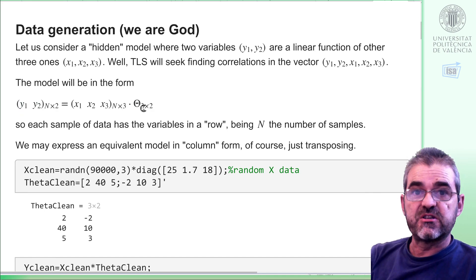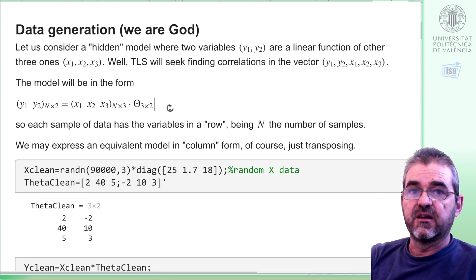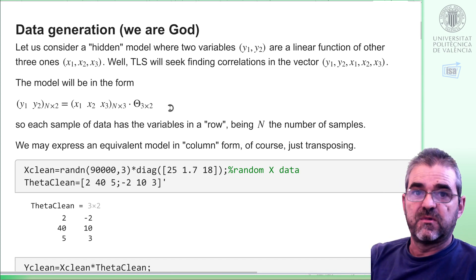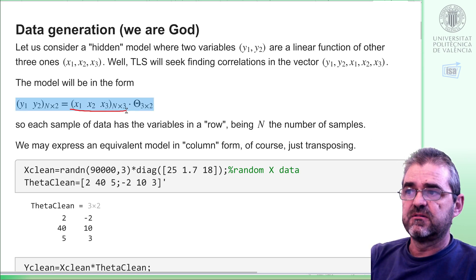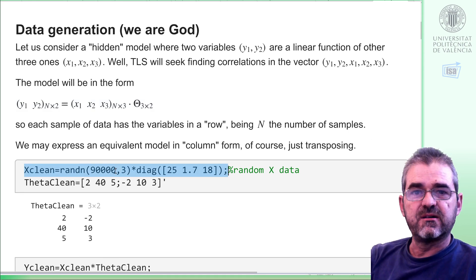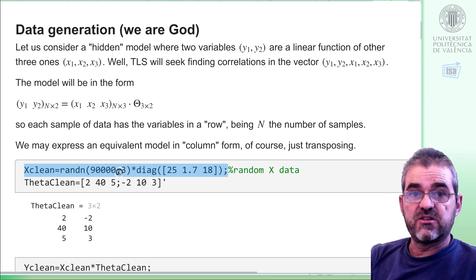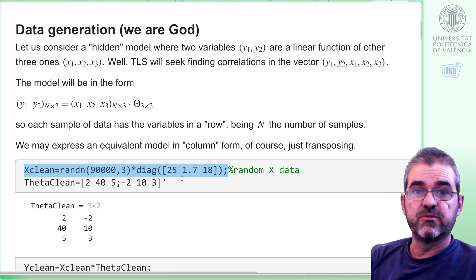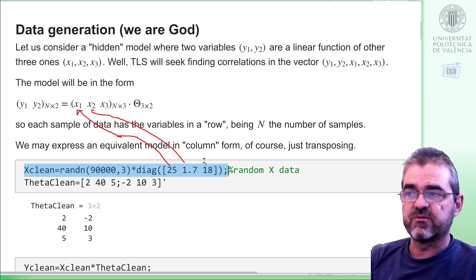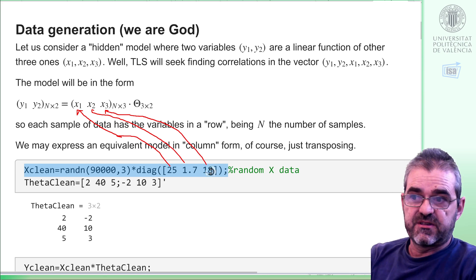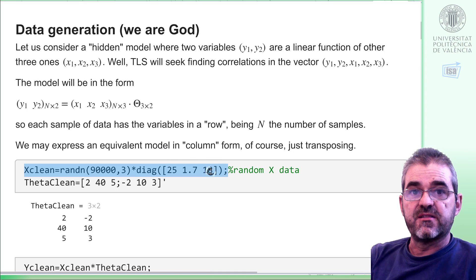Parameters theta must be three times two so that the matrix product can be carried out. And if we have many samples then we get these dimensions. Of course if we transpose everything then we would get the expression for data being in column form — it's just the same, you choose. So let us generate this data first by generating the x variables. I will have 90,000 samples. RANDN produces variables with standard deviation equal to one, and then I multiply by this diagonal matrix to generate three variables so that 25 is the standard deviation of x1, 1.7 is that of x2, and 18 is that of x3. We are not standardizing or scaling the data at this step.